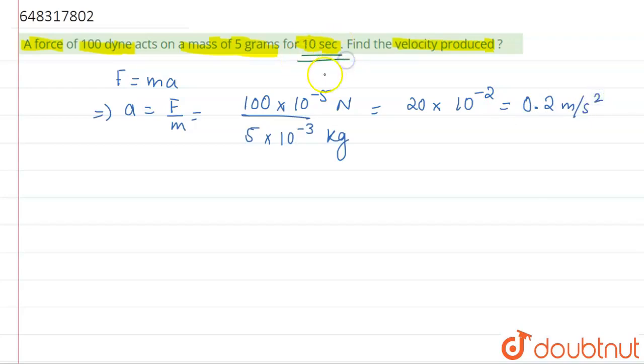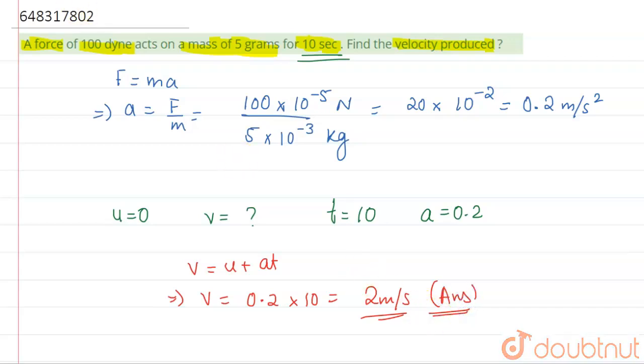Since the force is acting for 10 seconds, we have to take u equals 0, v equals unknown, t equals 10, and acceleration equals 0.2. We'll be using the first equation of motion v equals u plus at. Since u equals 0, and a is 0.2, and time is 10, this will come out to be 2 meter per second. So this is our answer. Got it? Thank you.